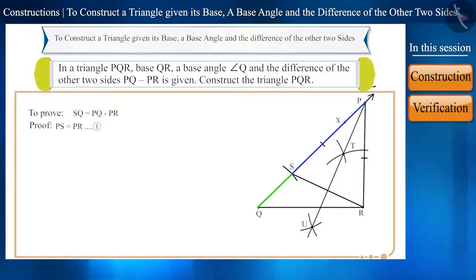And side PQ is formed by joining two line segments PS and SQ. Therefore, PQ is equal to PS plus SQ. And we can write it like this as well: SQ is equal to PQ minus PS. Using equation 1, we can write it as follows: SQ is equal to PQ minus PR.